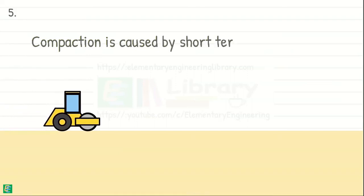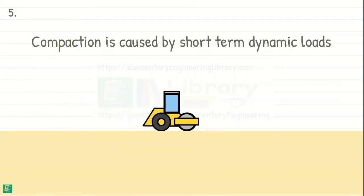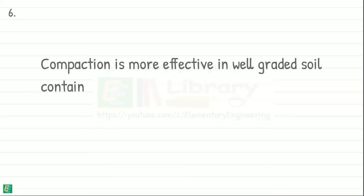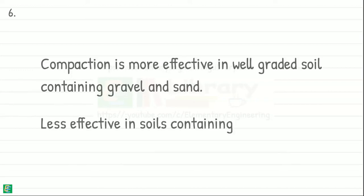Fifth, that compaction is caused by dynamic loads that are short term. They are removed once the process of compaction is completed. Sixth, compaction is more effective in well-graded soils containing gravel and sand, while it is less effective in soils containing silts and clays.